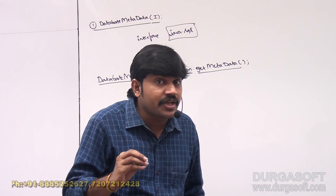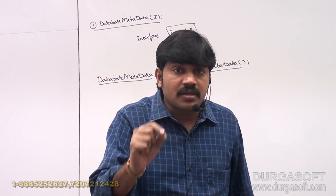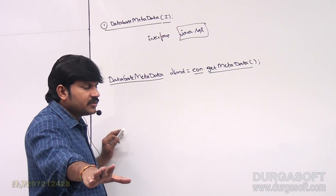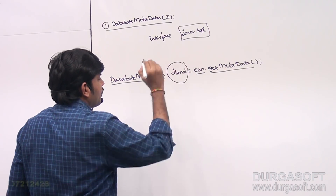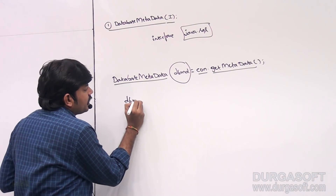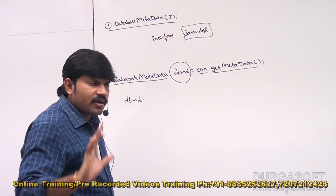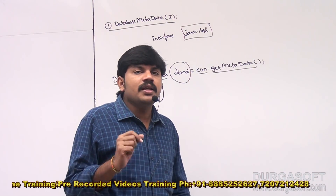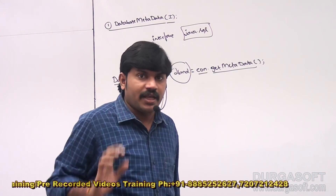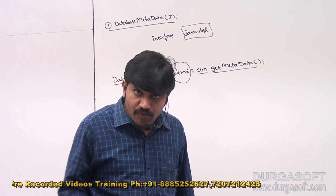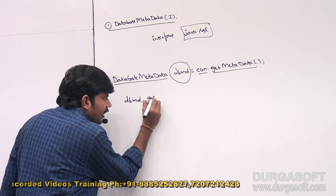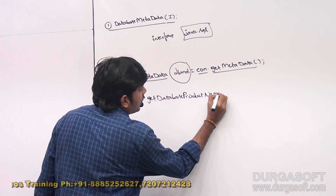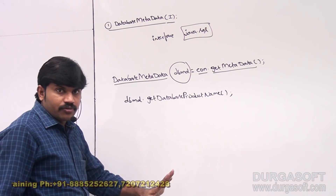Once we have the database metadata object, we can call any method on it. For example, to get the database product name — whether it is Oracle or MySQL — we call dbmd.getDatabaseProductName().